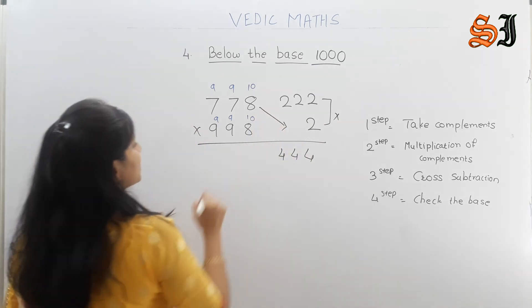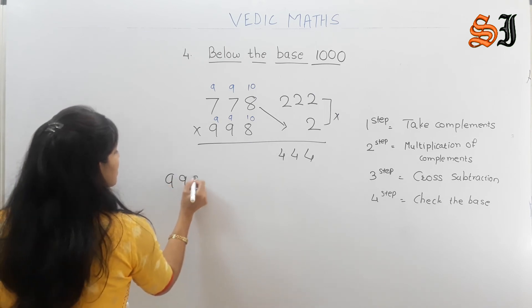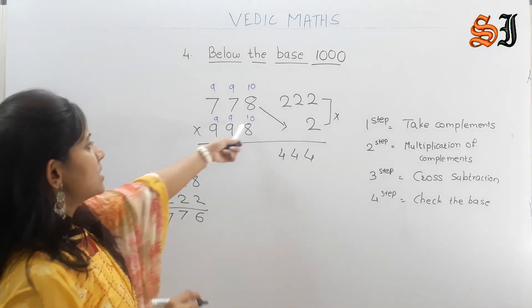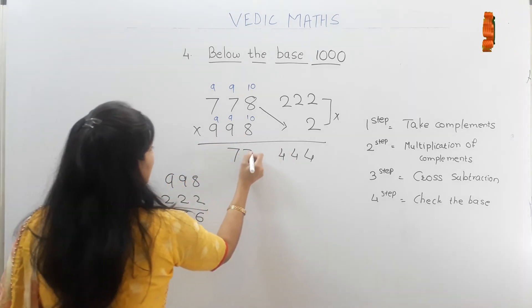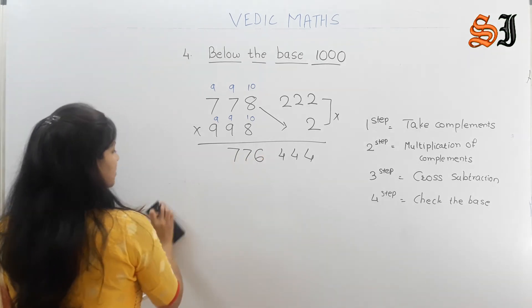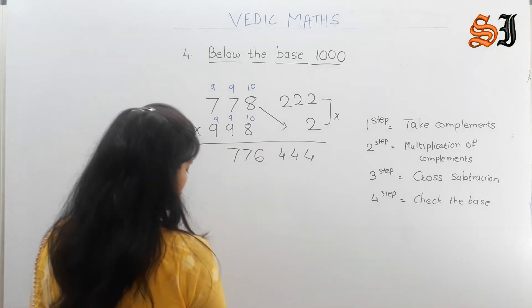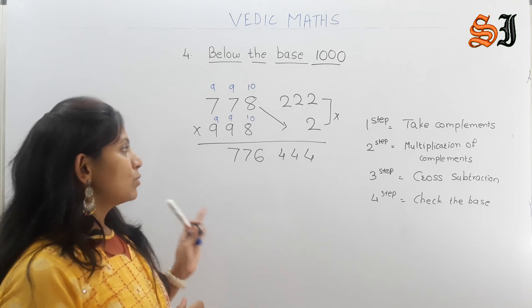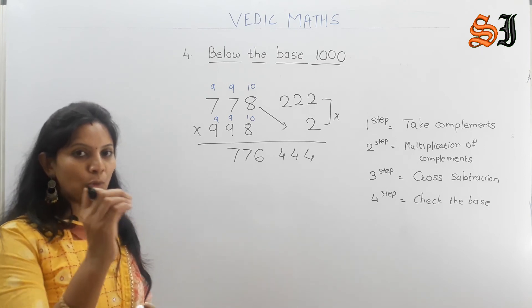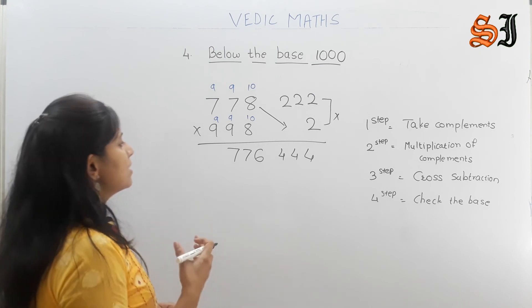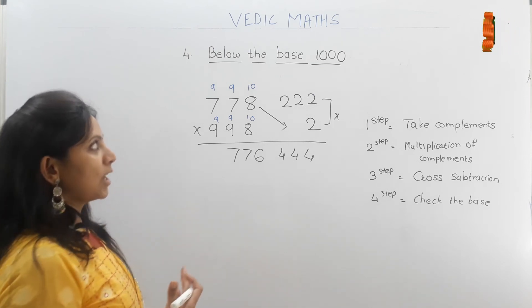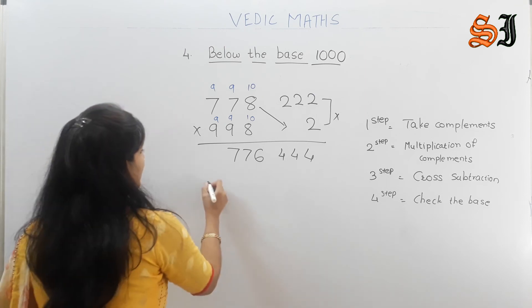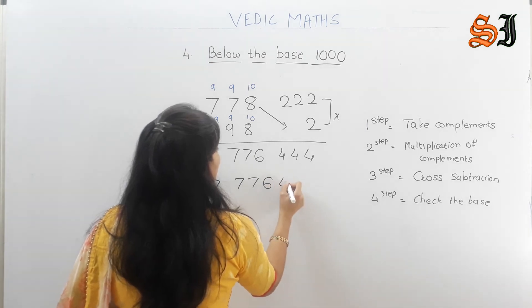Cross subtraction: 998 minus 2, 2, 2 gives 7, 7, 6. And 778 minus 2 gives 7, 7, 6. When you do cross subtraction, both answers should be the same — if not, your complements were wrong. So you can cross-check there. The answer is 7, 7, 6. Base is 1000 with 3 zeros, and 3 numbers already came on the right side. So our final answer is 7, 7, 6, 4, 4, 4.